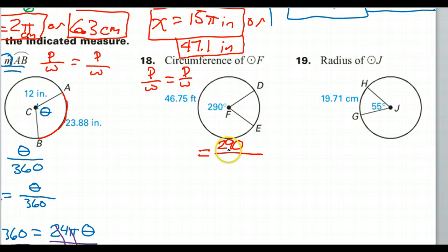Okay, so this is 290 degrees out of a total of 360. So we have the partial degrees and the total degrees.